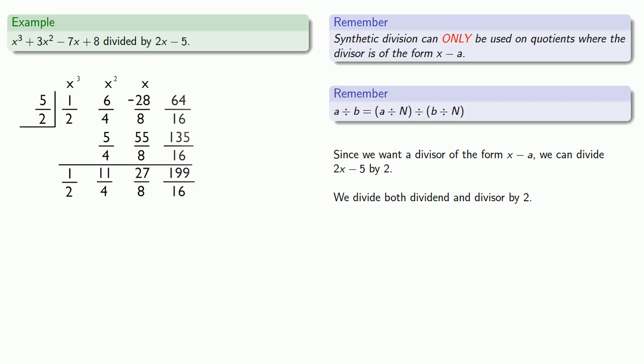And since this is the last column, we're done and we can read off our answer. One important idea. The last entry here is the remainder. But it's the remainder when we divide by x minus 5 halves. This is not the remainder when we divide by 2x minus 5.